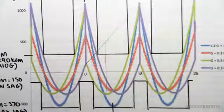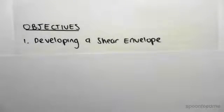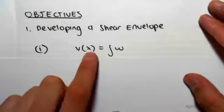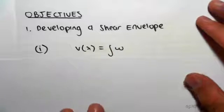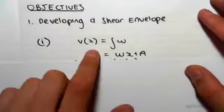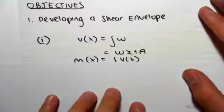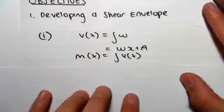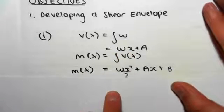There are two main theoretical concepts we'll go through before we solve it. The first is that shear is equal to the integral of the distributed load w. So integrating for x, we get w·x plus a constant A. And we know the moment is the integral of the shear, so integrating the shear for x we get w·x² / 2 plus A·x plus a second constant B.